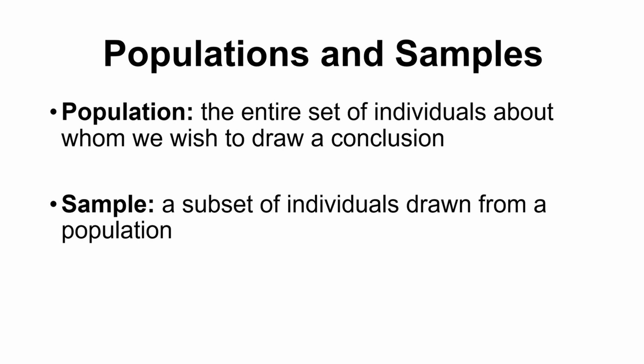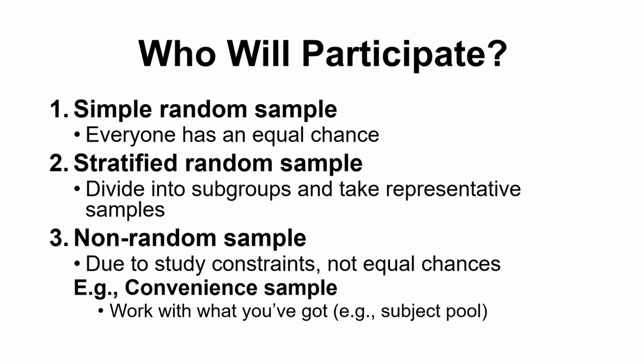There are a couple of different ways to decide who ends up in our sample. We have two main categories: random sampling and non-random sampling, which can each be broken down into different techniques. A simple random sample is a type of random sampling where everyone in our population has an equal chance of being selected. So if we had the ID numbers of every human on Earth, we'd use a random number generator to select a subset — as long as we're using something random, everyone has an equal chance of being selected.